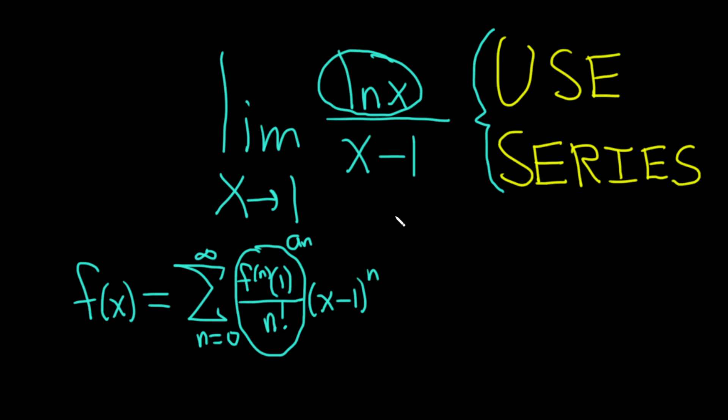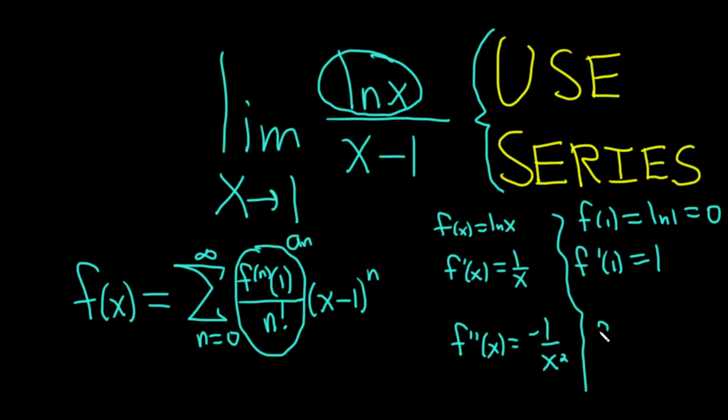So let's just start with the zeroth derivative, which is just f(x) equals ln(x). And then the first derivative is going to be 1 over x. And then the second derivative is going to be negative 1 over x squared. All right, now let's just go ahead and plug in the values of 1 for each of these. So f(1) is the natural log of 1, which is 0. f prime of 1 is just going to be 1 over 1, which is 1. And f double prime of 1 is going to be negative 1.